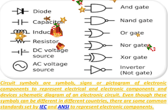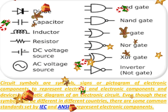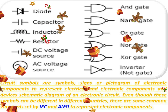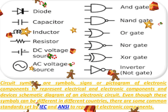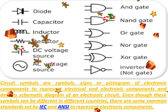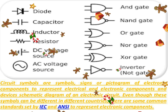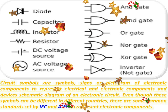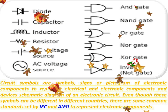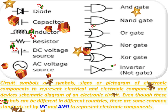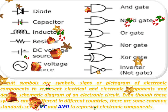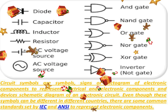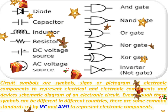Circuit symbols are pictograms of electronic components used to represent electrical and electronic components and devices in a schematic diagram of an electronic circuit. Even though these symbols can be different in different countries, there are some common standards set by IEC and ANSI to represent electronic components. These electronic circuit symbols are used in circuit diagrams to explain how a circuit is interconnected.